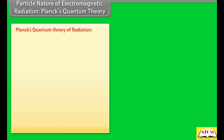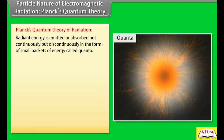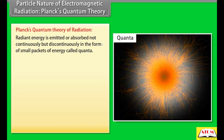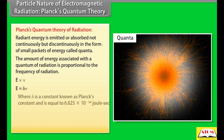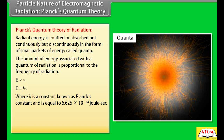Planck's quantum theory of radiation: Radiant energy is emitted or absorbed not continuously but discontinuously in the form of small packets of energy called quanta. The amount of energy associated with a quantum of radiation is proportional to the frequency of radiation. Planck's constant h is equal to 6.625 × 10⁻³⁴ joule second.